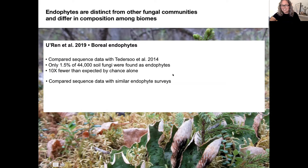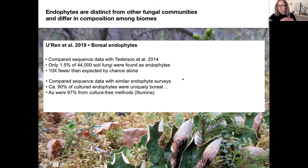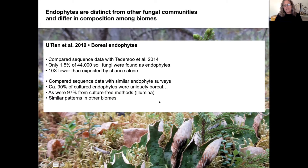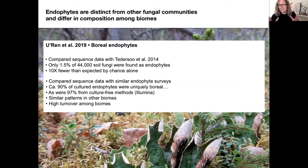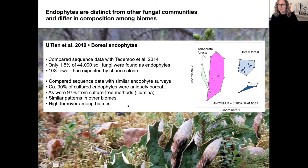Jana and the team also compared sequence data with endophyte surveys from temperate zones and other biomes, finding that about 90 percent of cultured endophytes from the boreal system were uniquely boreal compared to known databases, as were about 97 percent detected by culture-free methods. This suggests strong turnover as one moves from major biome to major biome — relatively distinct boreal, temperate, and tropical endophyte communities. Even focusing on a single widespread host genus, we see high turnover among biomes, illustrated here with endophytes from Cladonia, where temperate forests are quite separate from boreal forest and arctic tundra.